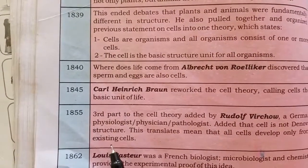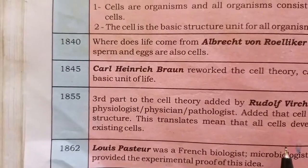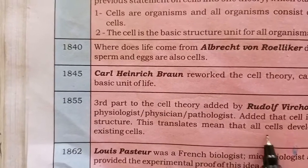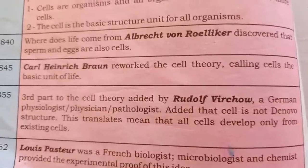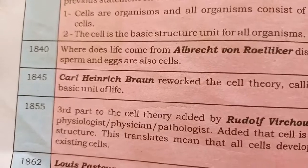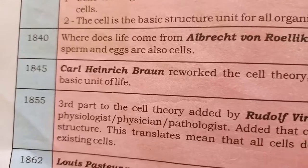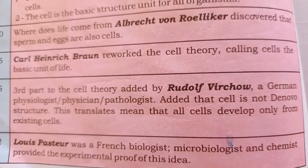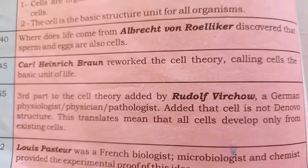In 1855, Rudolf Virchow, a German scientist, proposed that all cells develop from only pre-existing cells. This means cells are not generated spontaneously — new cells can only come from pre-existing cells.